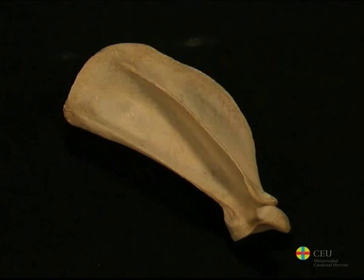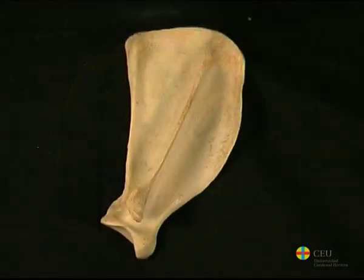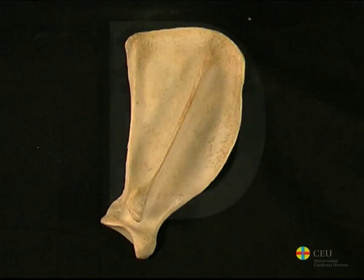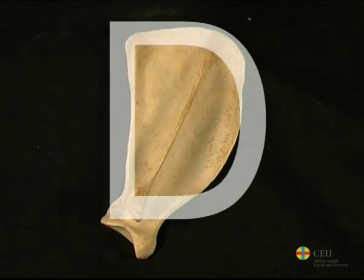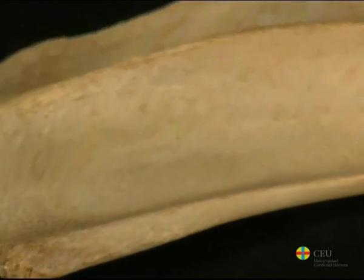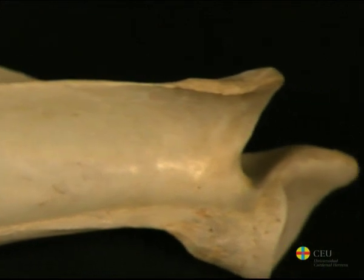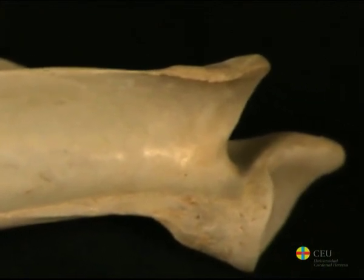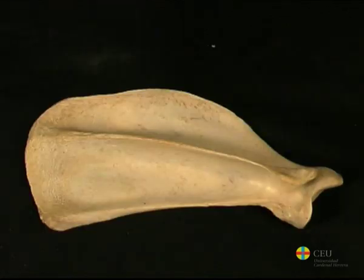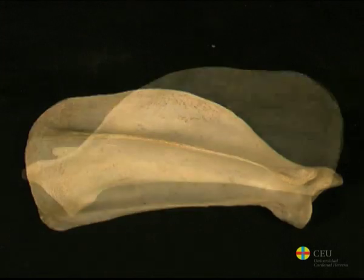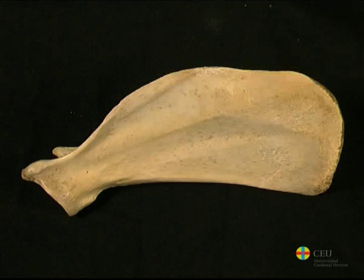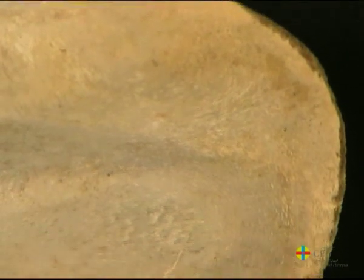The scapula of carnivores is generally longer and narrower, and its shape is less triangular than in other domestic species. The cranial edge is convex, giving the bone a shape that resembles the letter D. The spine of the scapula is tall and thin, without marked tuberosity. It ends in the acromion, which presents a ventral prominence, the hamate process. The spine divides the lateral face into two fossae, whose size difference is not as great as in ungulates. On the costal side, the fascia serrata also have a somewhat peculiar shape — square on the cranial part and elongated on the caudal part.